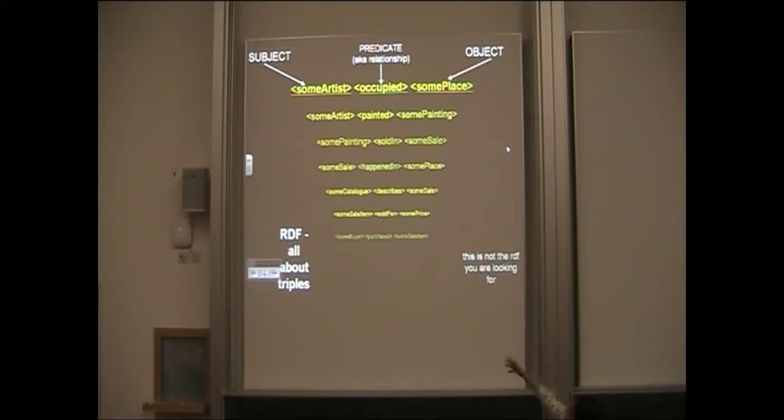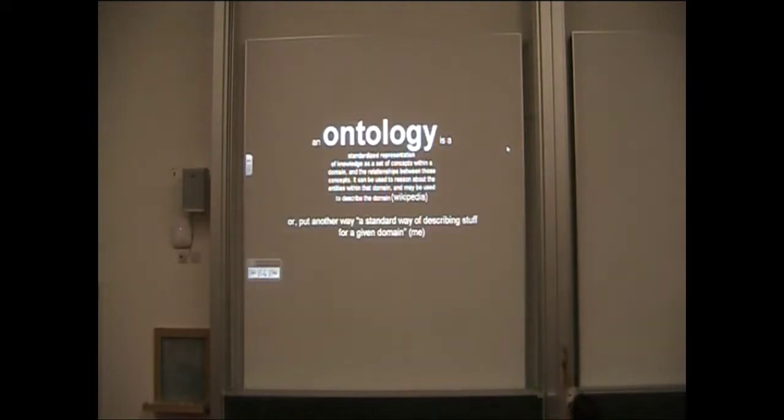So these are some fake examples of how our data could look: an artist occupied a place, an artist painted a painting, a painting was sold in a sale. All of them would be identified with URIs.